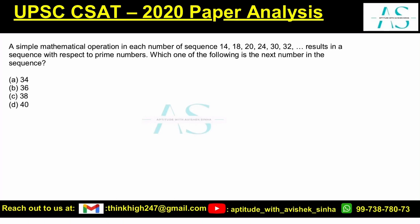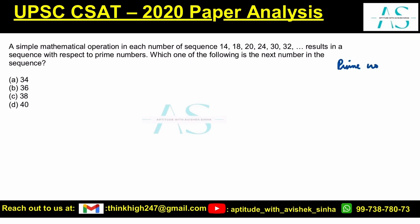A mathematical operation on each number in the sequence 14, 18, 20, 24, 30, and 32 results in a sequence with respect to prime numbers. Which one of the following options is the next number in the sequence? Prime numbers are numbers having only two factors: one and the number itself.